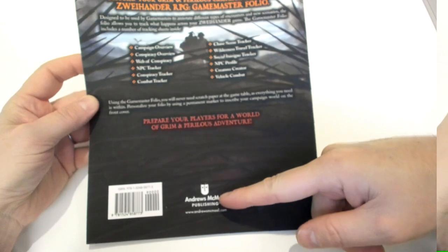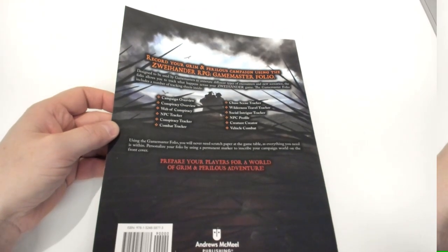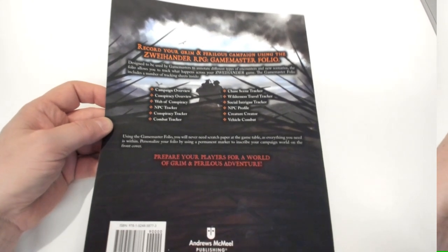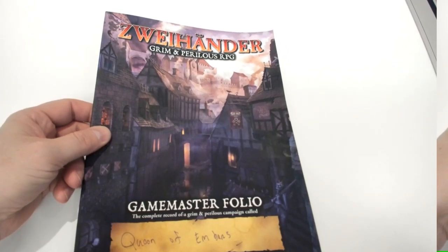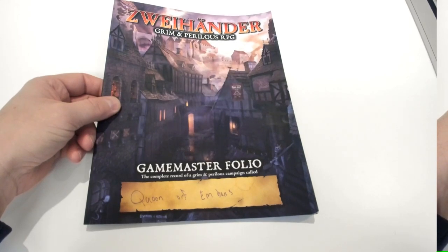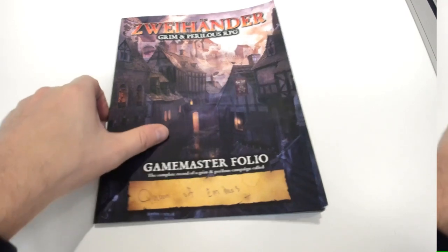So this game master folio, once again published by Andrews McMeel Publishing, the new publisher for Zweihander products, also where I currently work as creative director. This is once again soft touch cover, high quality paper, super high quality paper. The game master folio currently right now is going to be released for $14.99. Once again it is meant to be used over the course of a complete campaign, so be sure to write your campaign name at the very top when you first get it.